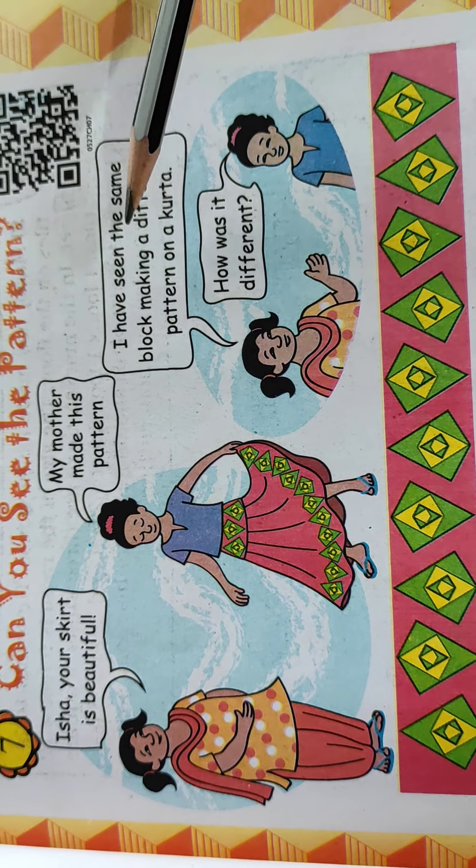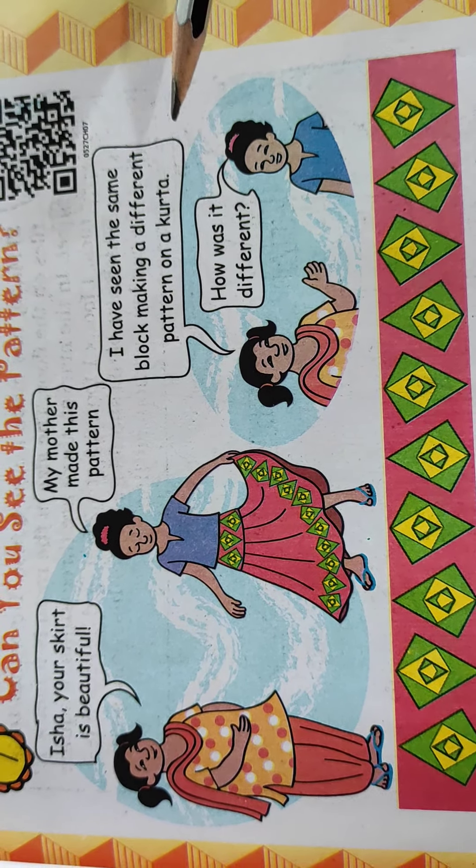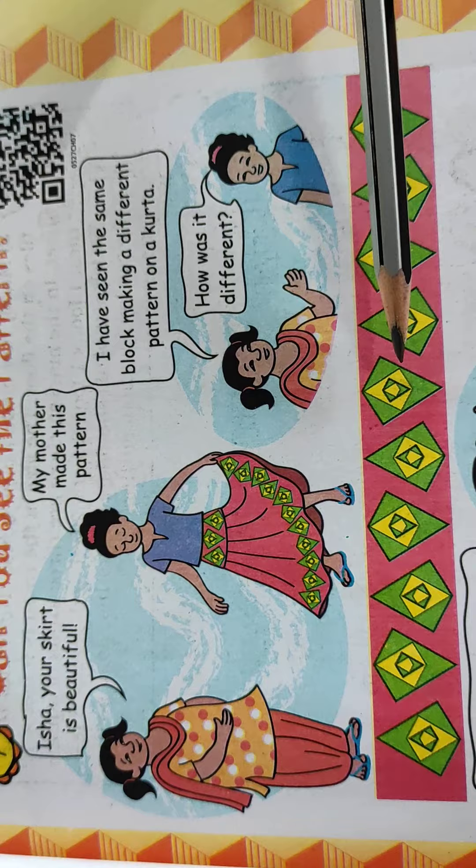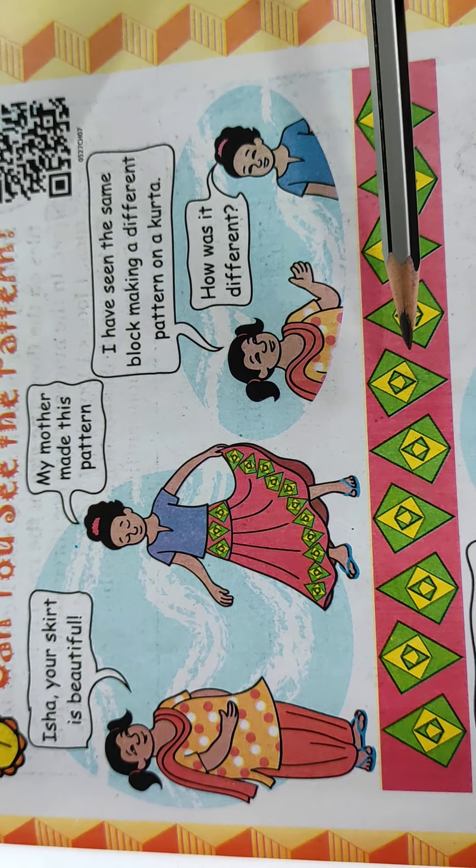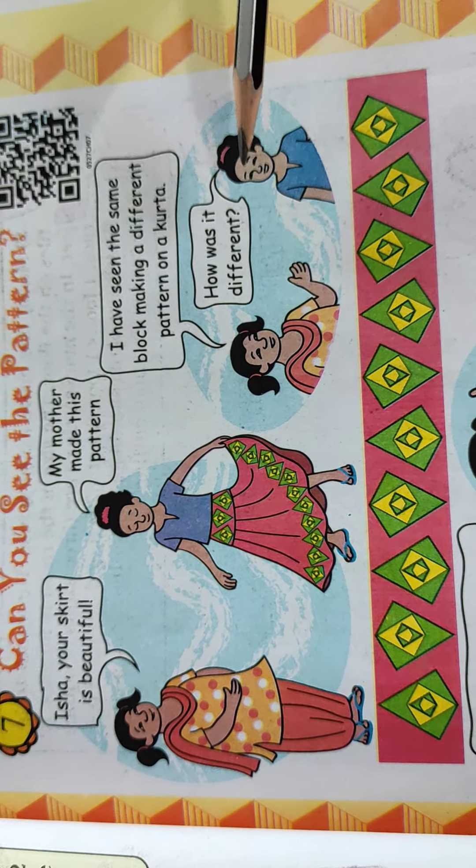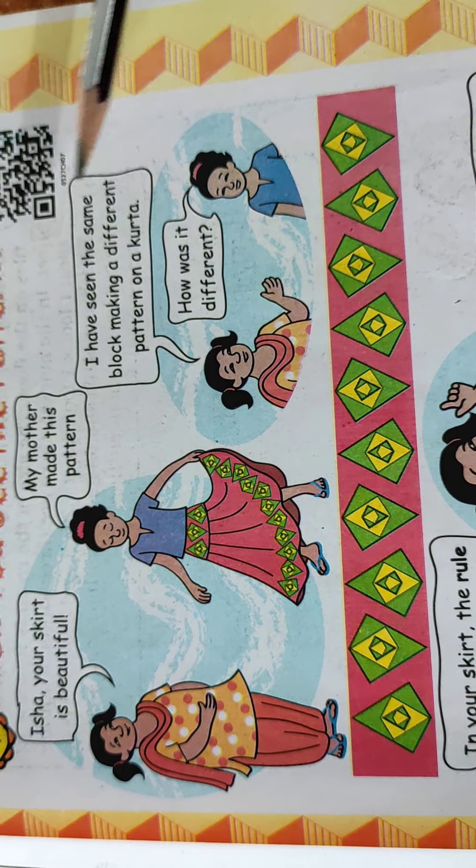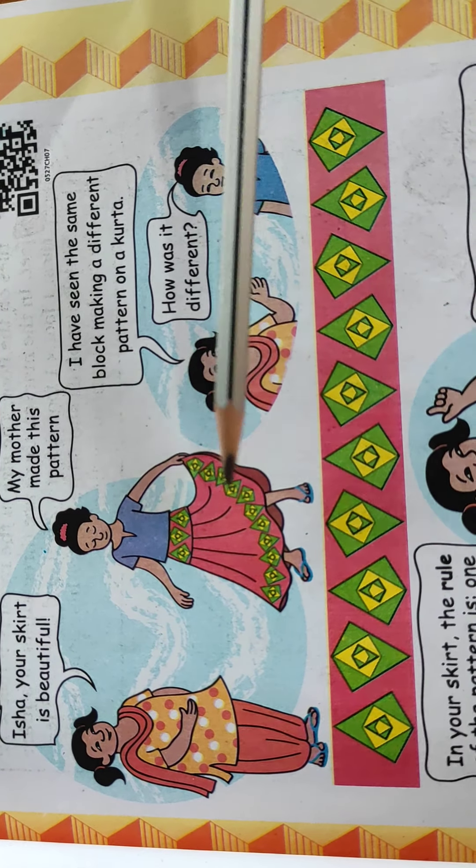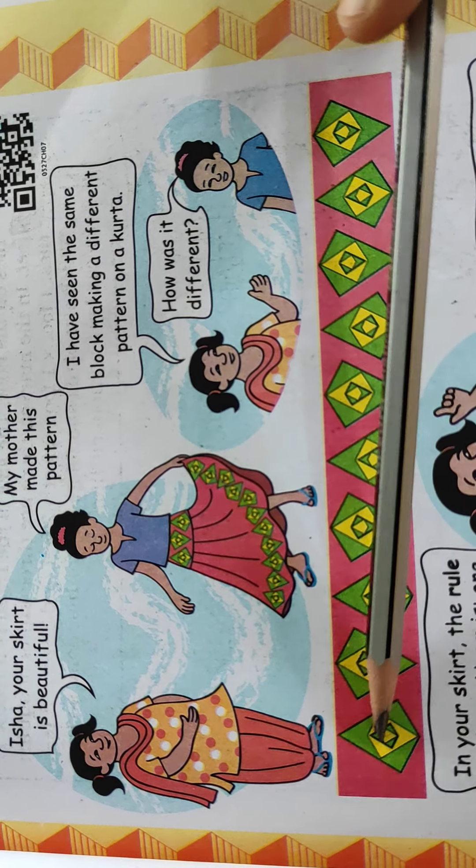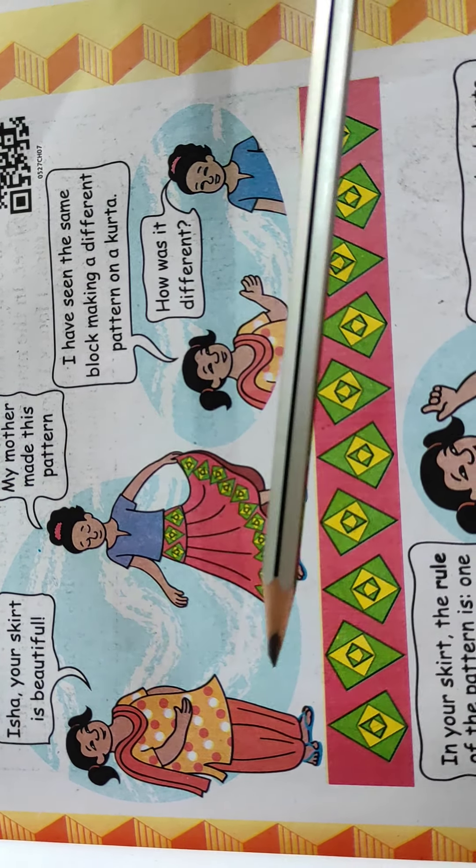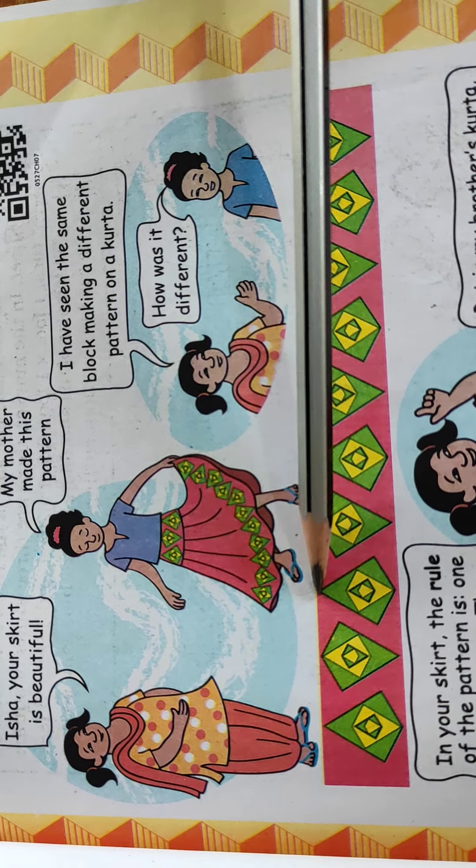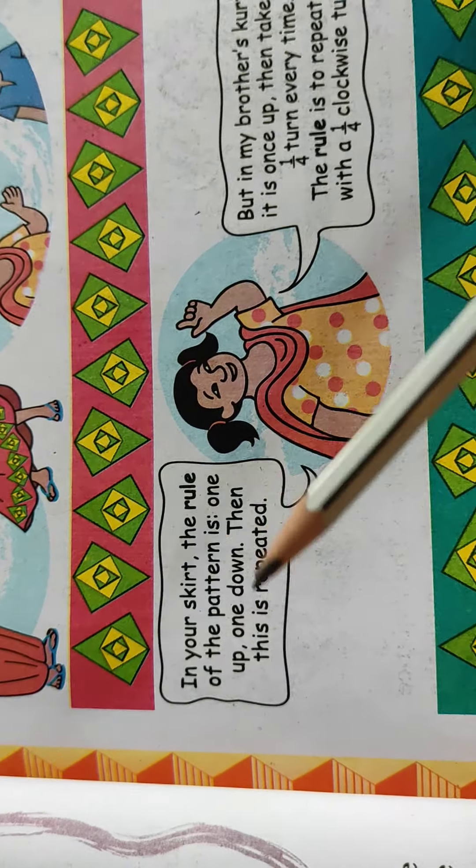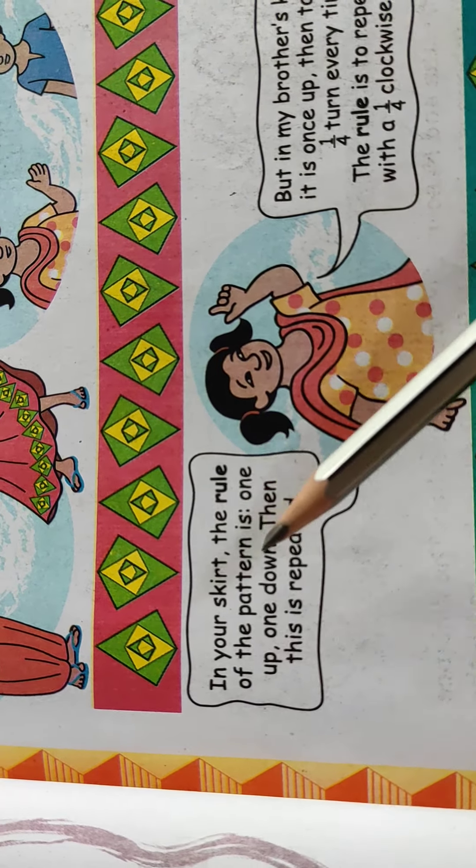I have seen the same block making a different pattern on a kurta. She is telling to her कि मैंने जो है यही block use किये हैं पर मैंने तो अलग सा pattern बनाया हैं. Then the girl is asking how was it different? अलग कैसे बनाया है तुमने? So first observe this girl's pattern. Quadrilateral. Upside downwards. Upwards this and downwards. Upwards then downwards. So she is telling, in your skirt the rule of the pattern.